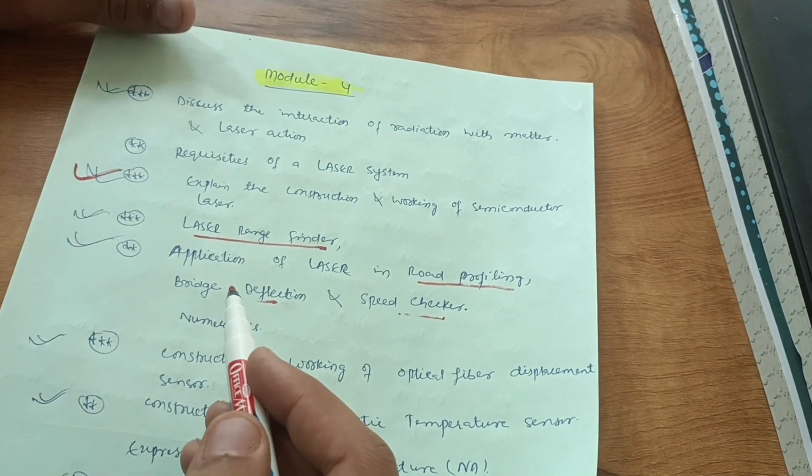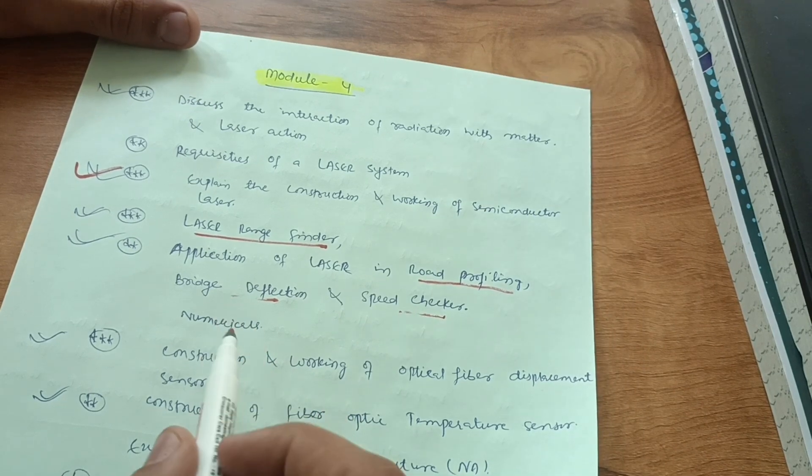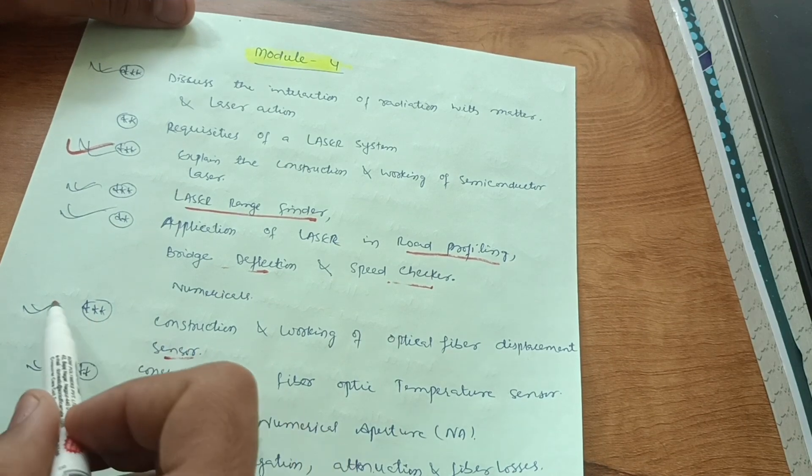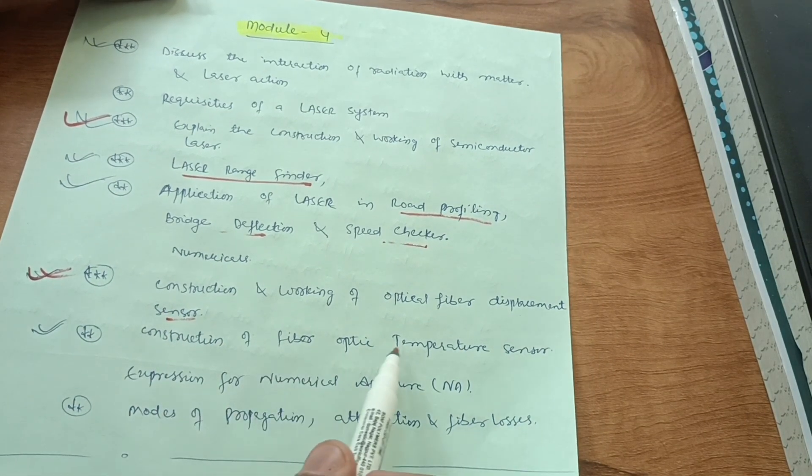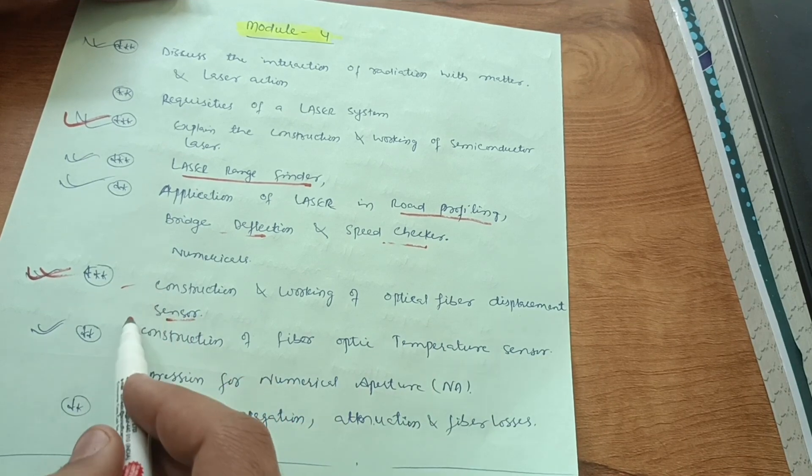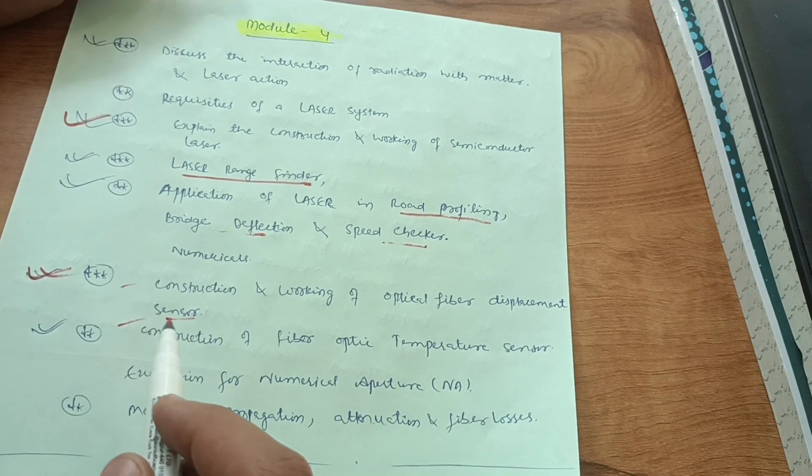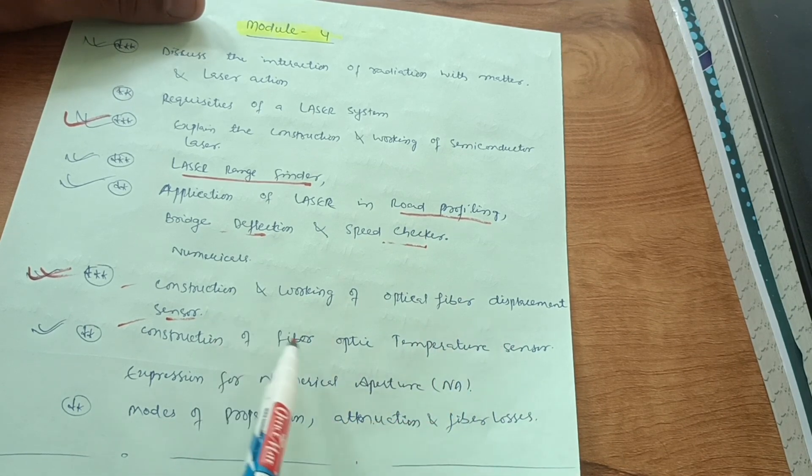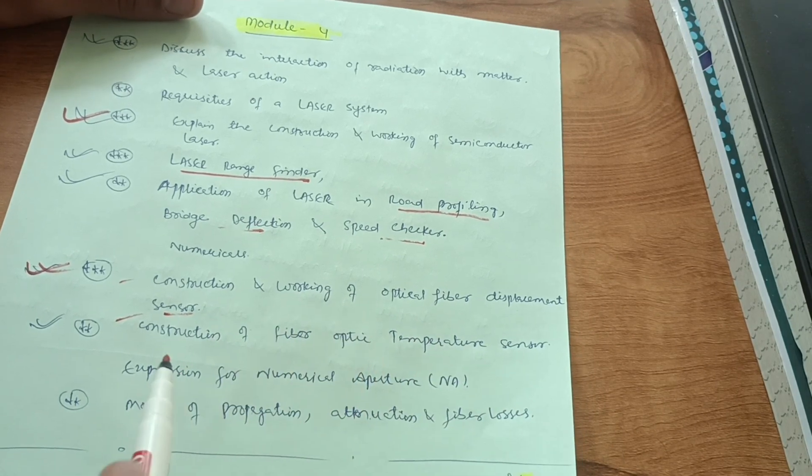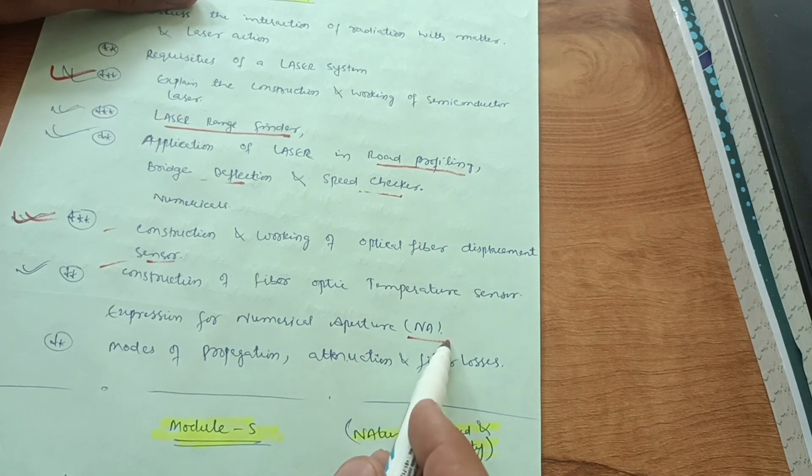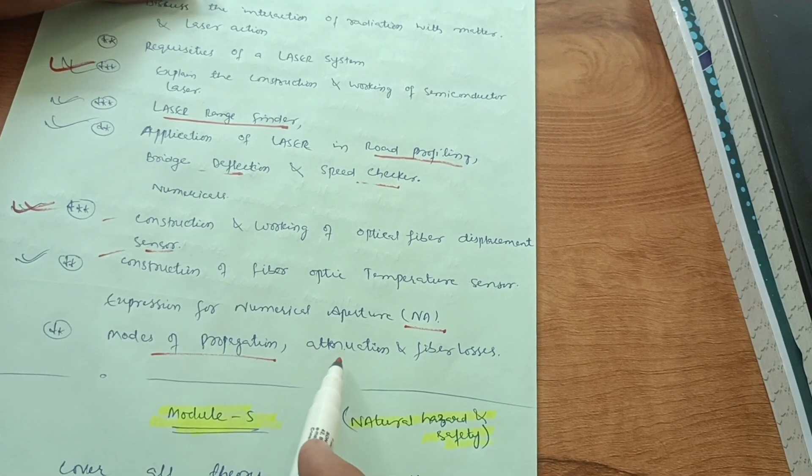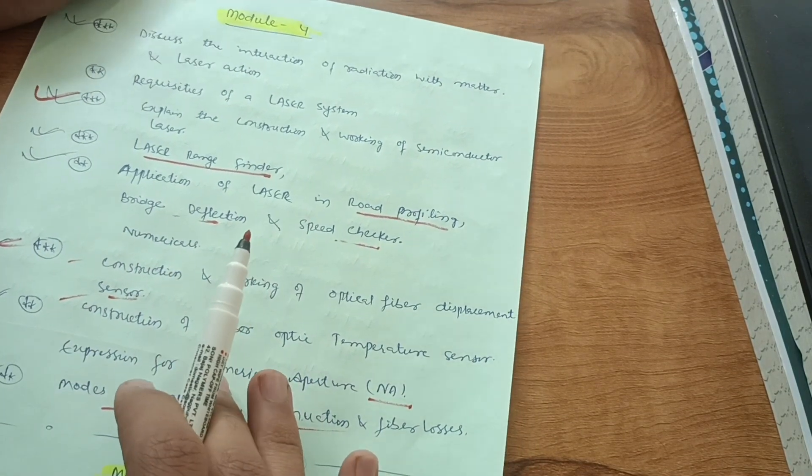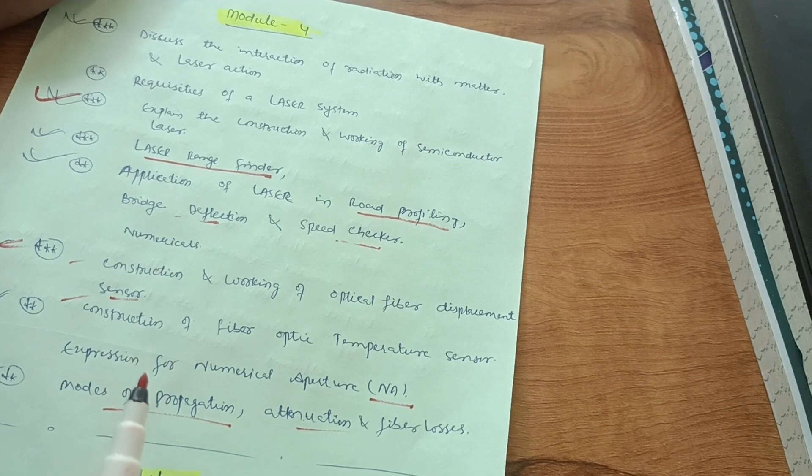Then construction and working of optical fiber displacement sensor is again a super important question. Construction of fiber optic temperature sensor. These two sensors you have to go through, try to practice well for optic fiber displacement sensor and optic temperature sensor. Expression for numerical aperture, again an important one. Modes of propagation and attenuation and fiber losses. This much content is enough to cover module four.